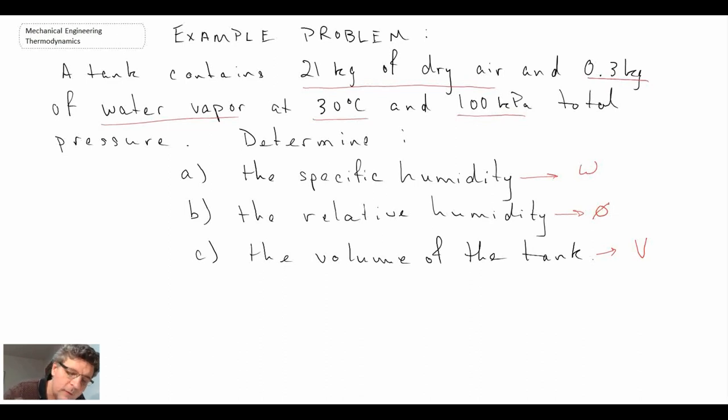We'll begin by looking at the specific humidity. In order to determine specific humidity, we will use one of the equations, the one that defines specific humidity as being the mass of the water vapor to the mass of the dry air. They give us that in the problem, so that's pretty straightforward, and that gives us the specific humidity.